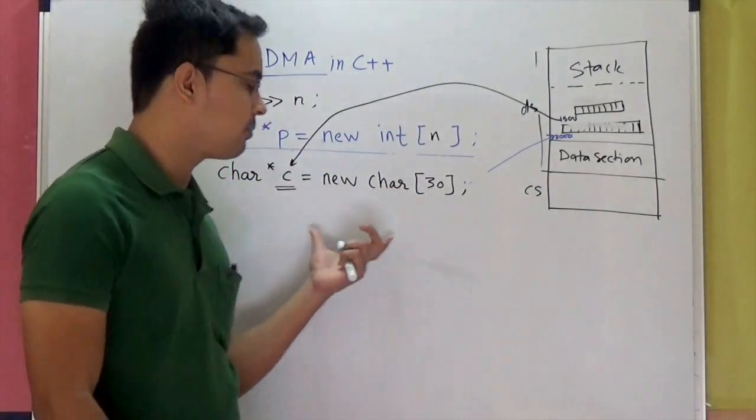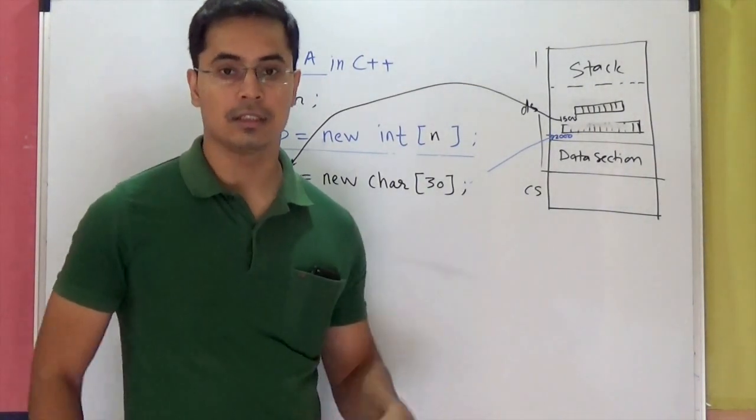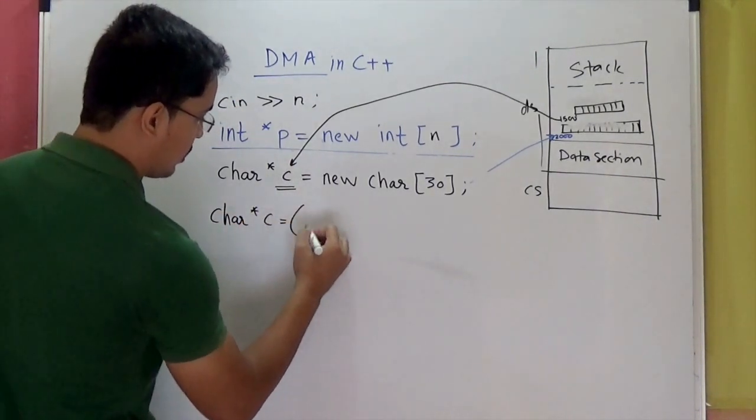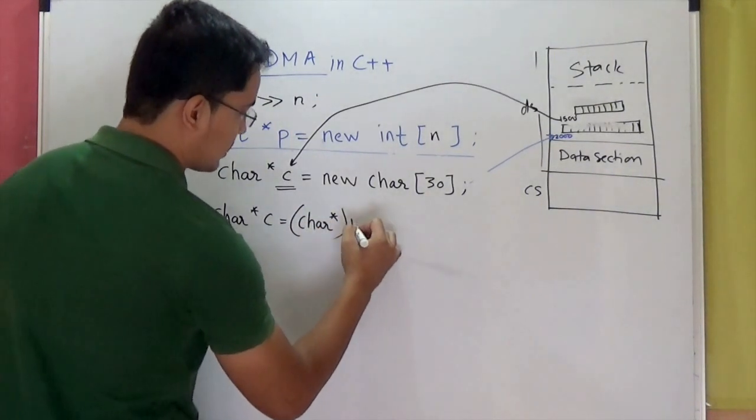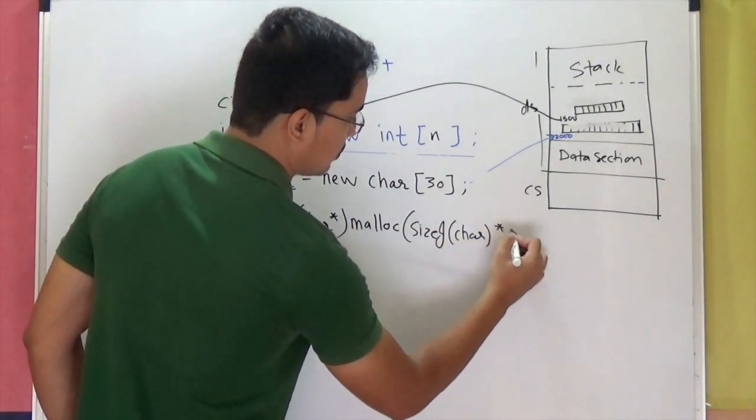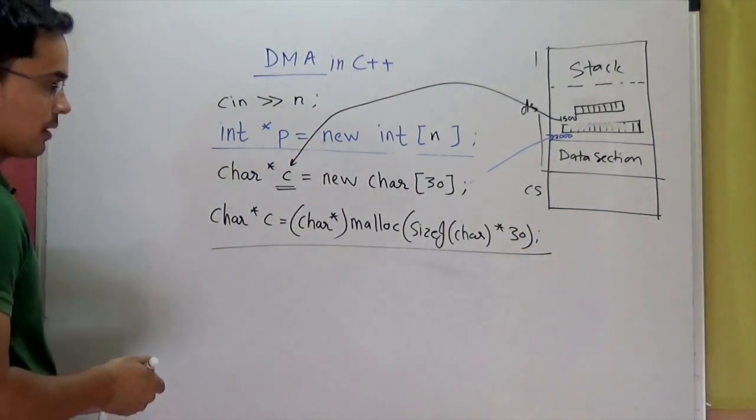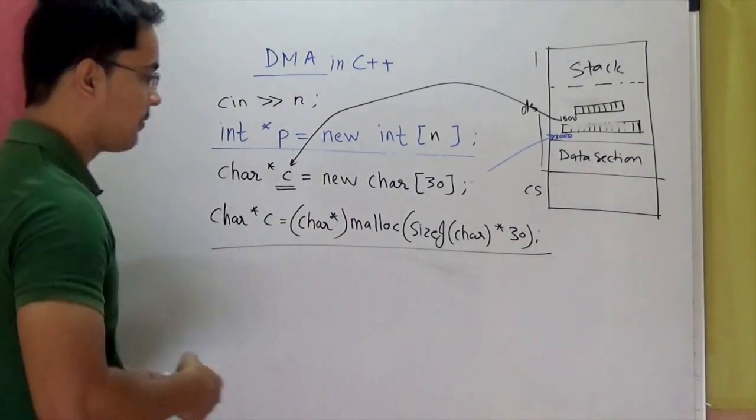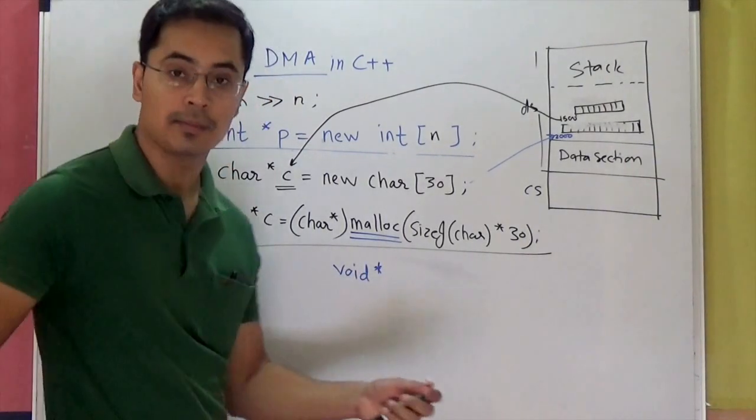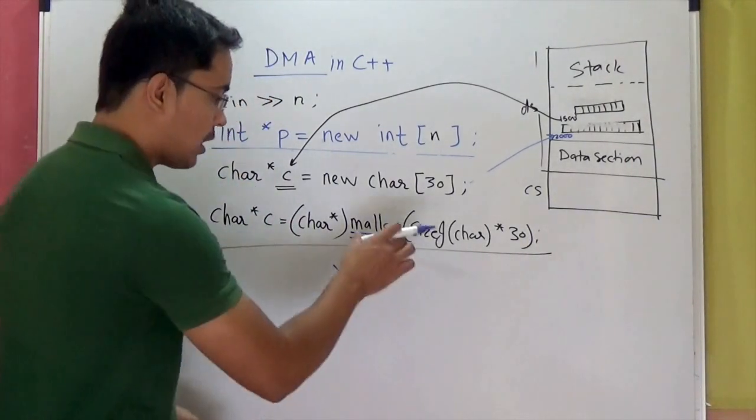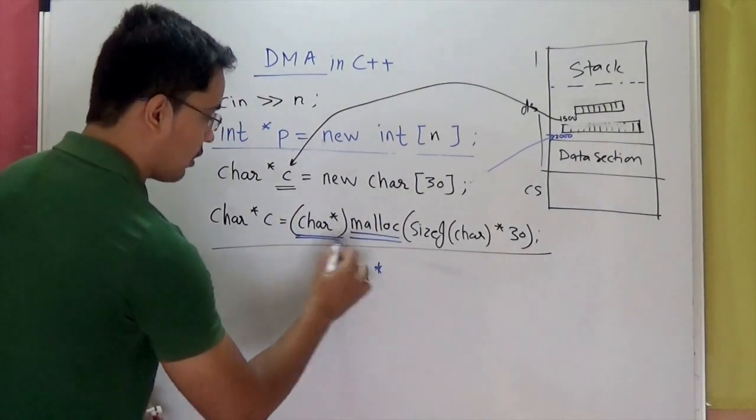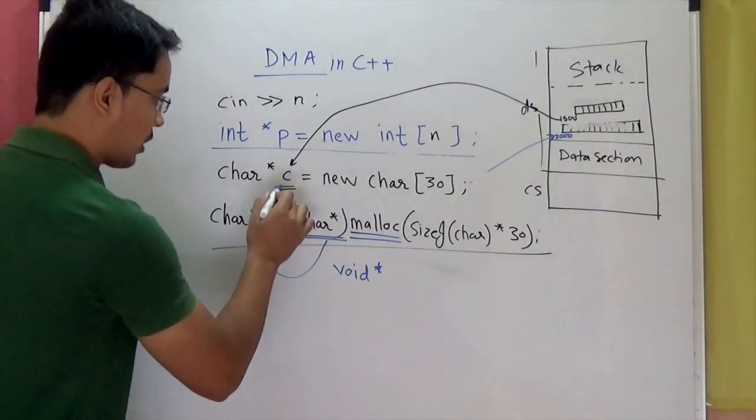One significant change from the syntax in C language and syntax in C++ language is, the C equivalent of this statement will be character star C equal to, I have to typecast, malloc size of character into 30. So this is my C equivalent of the same statement. Now you see the difference. First of all, malloc returns void pointer. We talked about this when we discussed the C language dynamic memory allocation. So malloc or calloc or realloc, all of them return void pointer. So we have to typecast into specific kind of pointer before assigning it. This is not required in C++.